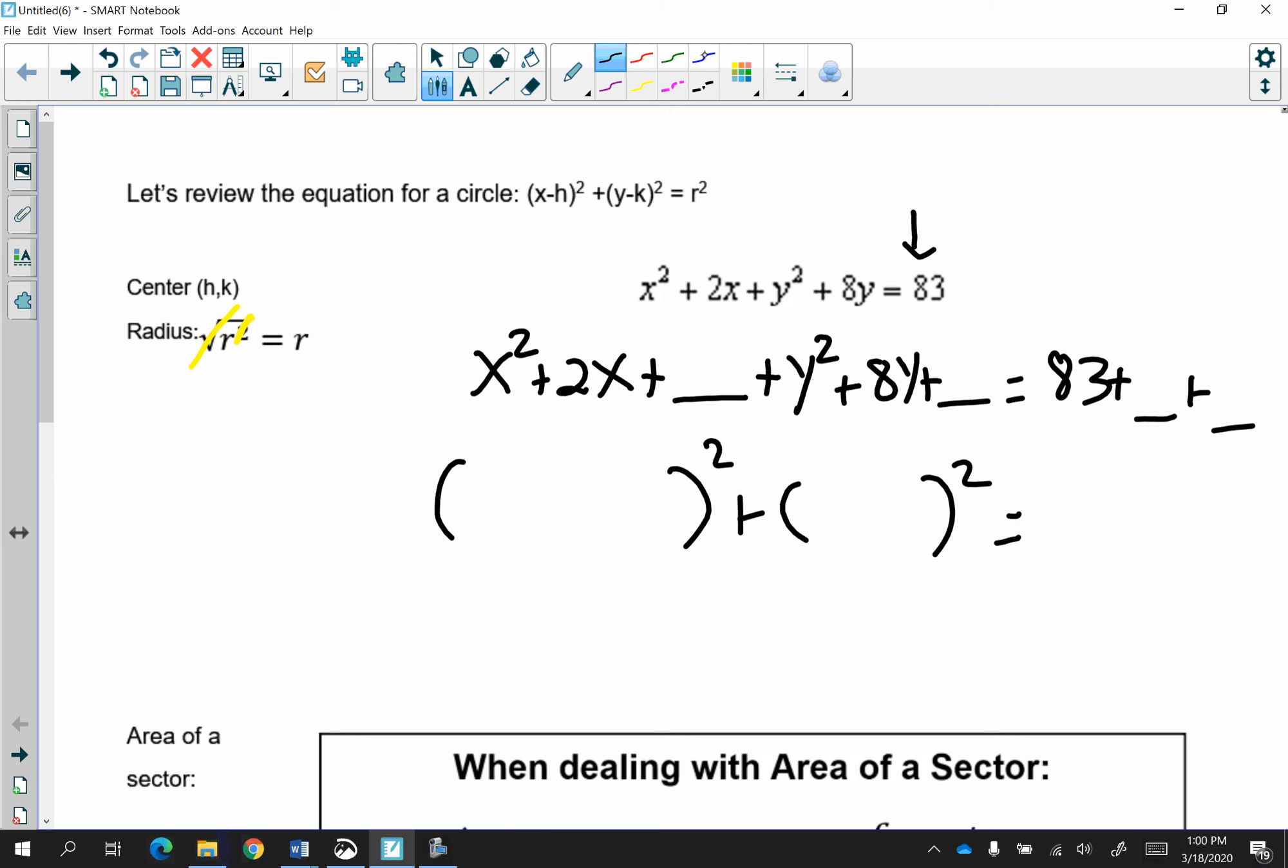I see an x, drop an x, x squared, whatever this sign is, drop it. Half of 2 is 1, 1 squared scoops right up here, is 1. See a y squared, drop a y. What's this sign? Drop it. Half of 8 is 4. 4 squared is 16. I added a 1 and a 16. That adds to 100.